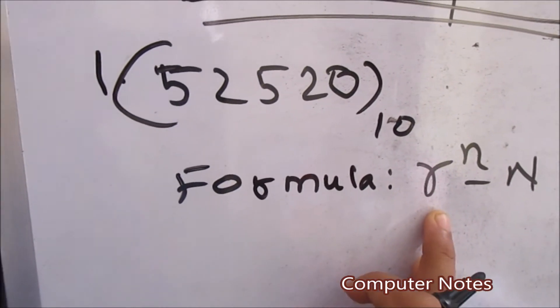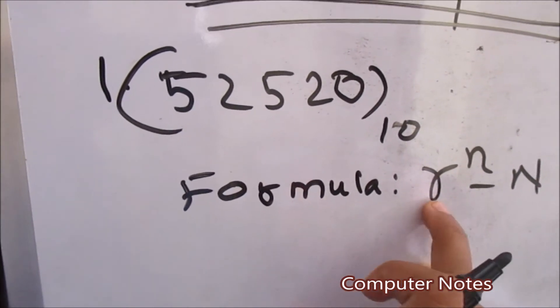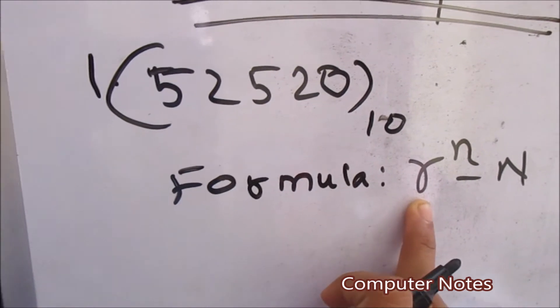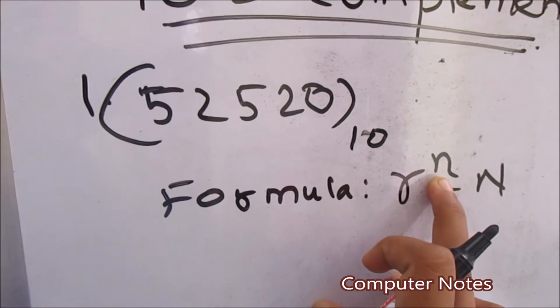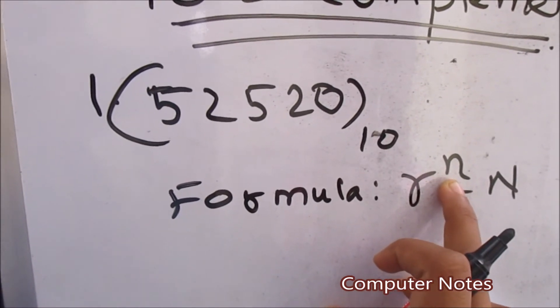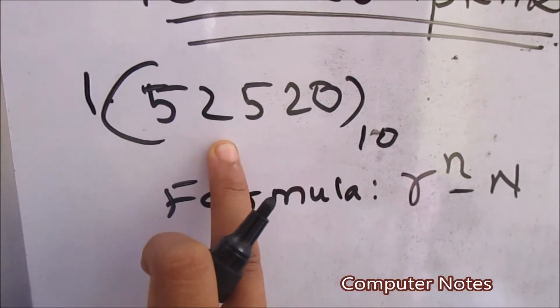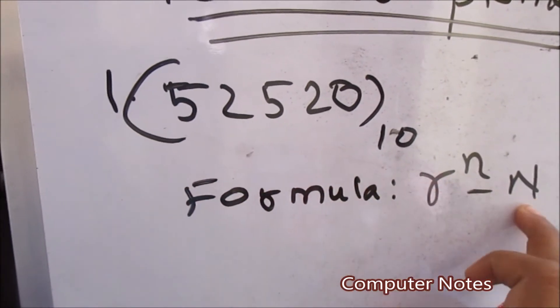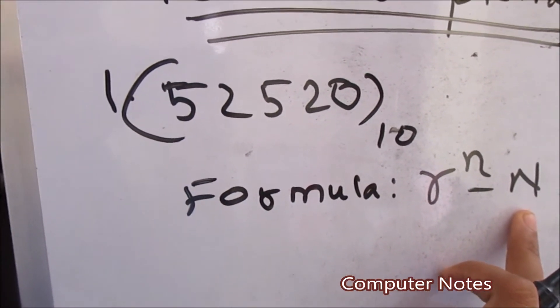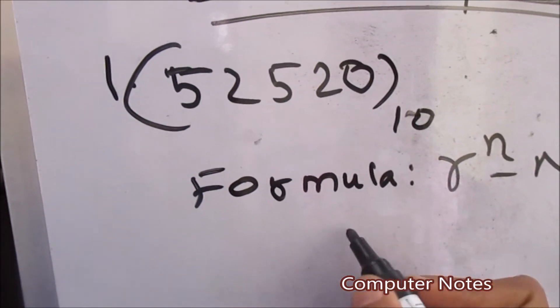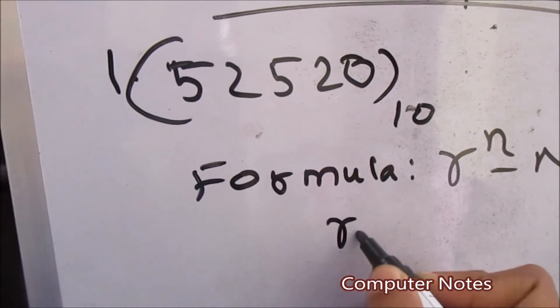Here I have explained in my previous class that small r is the value of base value and small n is the value of the given integer. Given integer means it is 52520. Then big N, big N value is the integer value which is given.